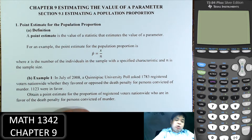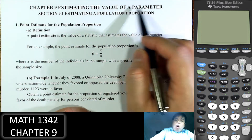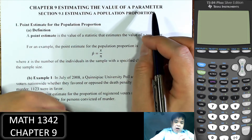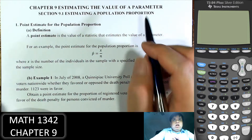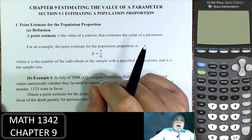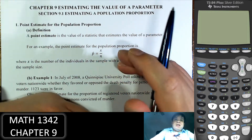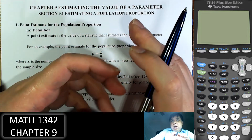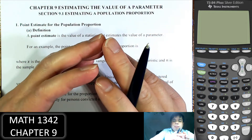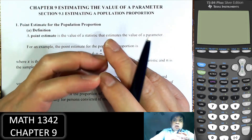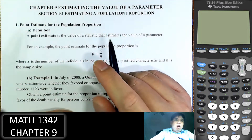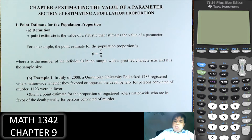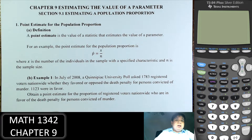Hi everybody, welcome to another video in statistics, chapter 9: estimating the values of a parameter. A parameter is a value of the population. A statistic is the value of a sample. The idea of statistics is that we can gather a sample and with that we do some calculation. We get a statistic, and then we estimate what will be the values for the whole population. This is very important and has a lot of practical applications.